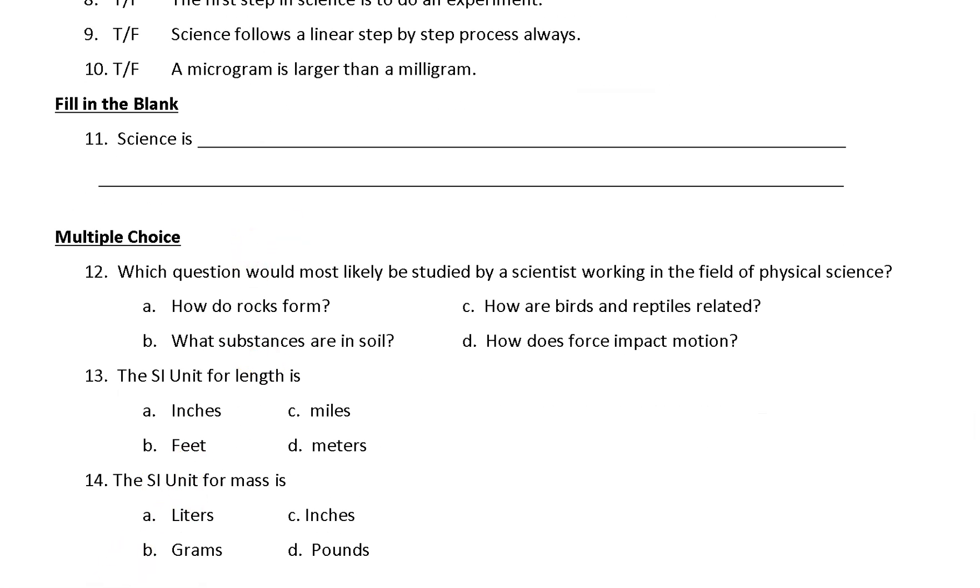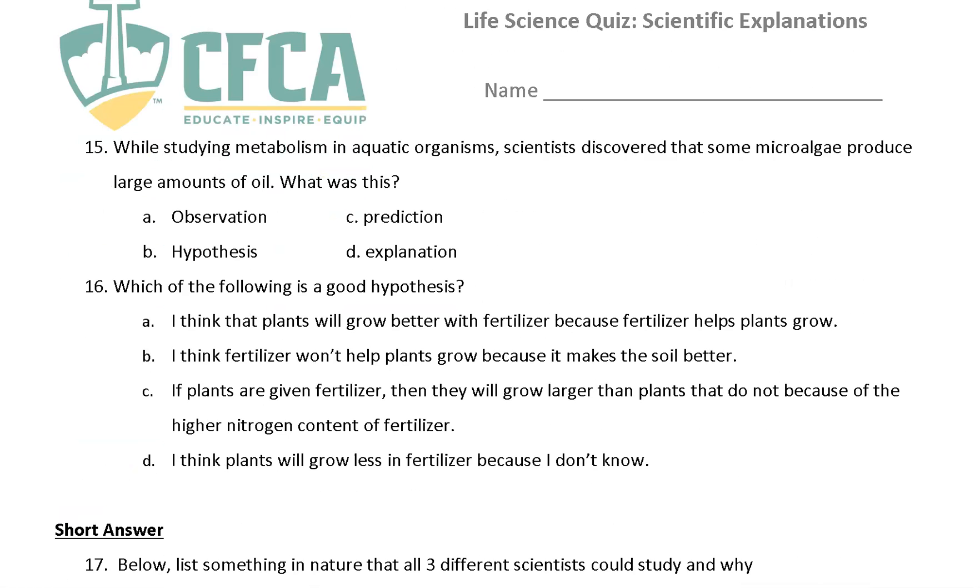Starting with multiple choice, what question would be most likely studied by scientists working in a field of physical science? Physical science deals with like forces and light and chemical reactions. So the best answer is D. The SI unit or the units that are used around the world in scientific labs and scientific communities for length is meters and mass it's grams. So if you put inches and pounds for that, those are customary units used in America and a few other places, but that's not what scientists use around the world.